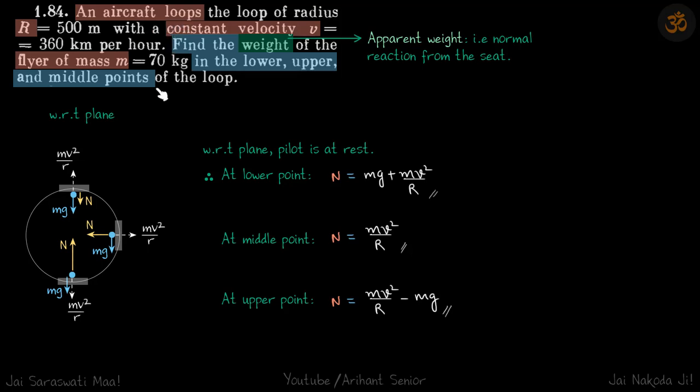We have an aircraft that is looping in a circle, in a vertical circle. We need to find the weight of the flyer of mass m at top, at middle, and at the bottom. So when he says weight, what we mean is apparent weight, that is normal reaction from the seat.